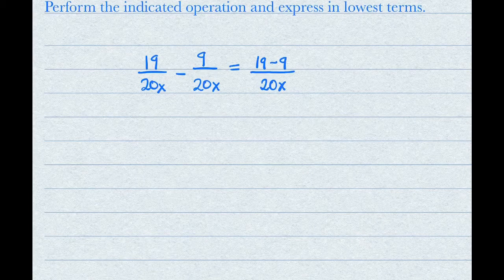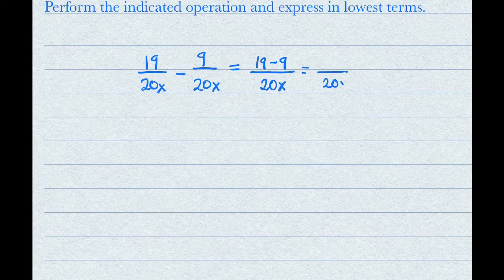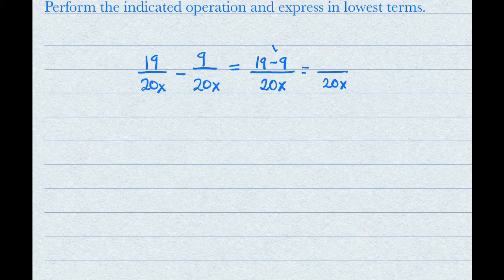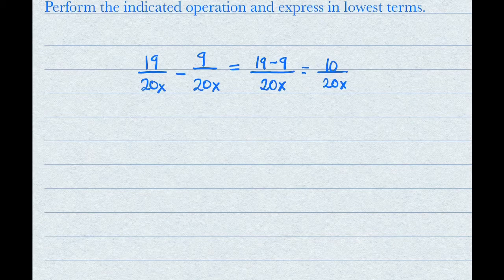17 minus 7 will be the numerator. So you know the denominator is going to stay the same, it's going to be 20x. So all you have to look at is the 17 minus 7 part. 17 minus 7 is just going to be 10.